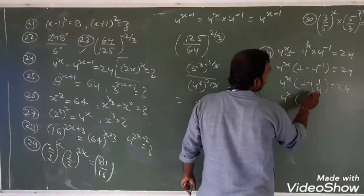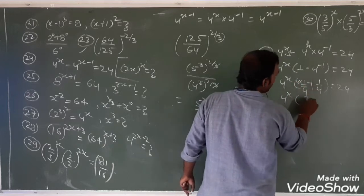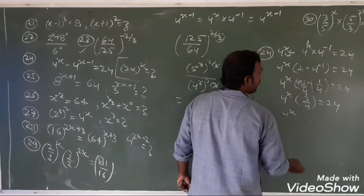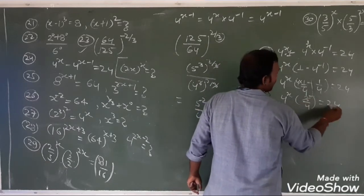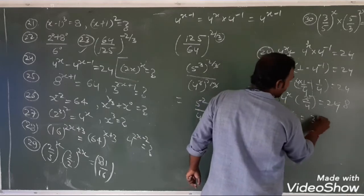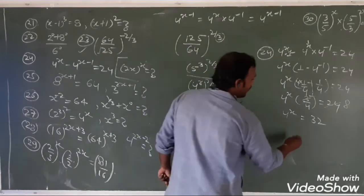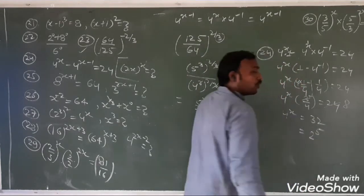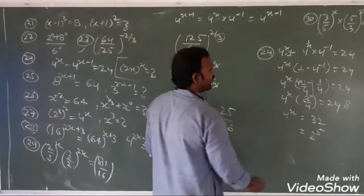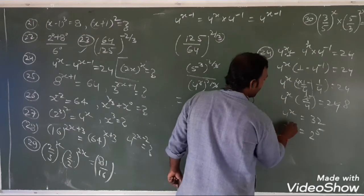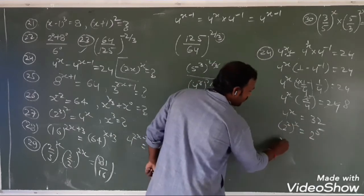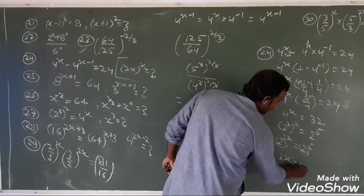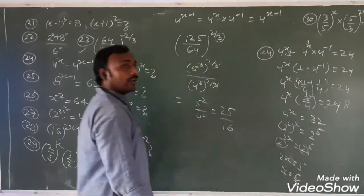So 4^x times (3/4) = 24. Taking 4 to the other side: 4^x times 3 = 96, so 4^x = 32. Now 32 cannot be expressed in base 4, so write 32 as 2^5. And 4^x = (2^2)^x = 2^(2x). So 2^(2x) = 2^5. Since bases are equal, 2x = 5, therefore x = 5/2.